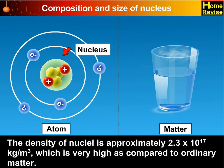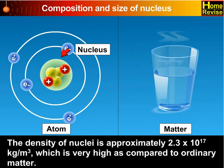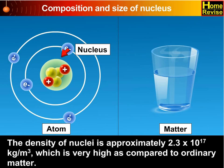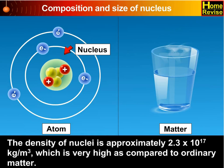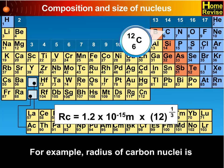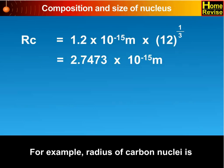The density of nuclei is approximately 2.3 into 10 raise to 17 kg per meter cube, which is very high compared to ordinary matter. For example, the radius of carbon nuclei is Rc equal to 1.2 into 10 raise to minus 15 meters into 12 raise to 1 upon 3, which equals 2.7473 into 10 raise to minus 15 meters.